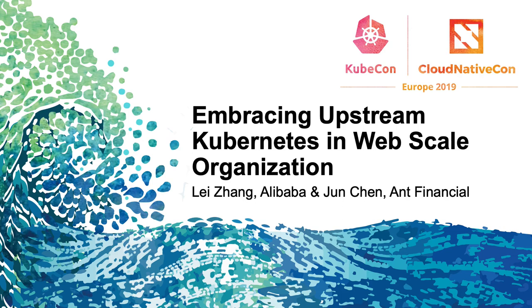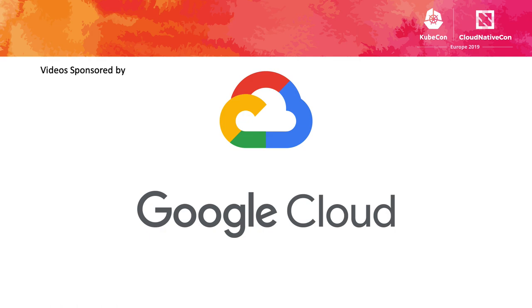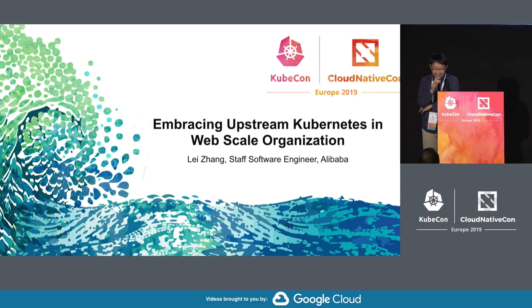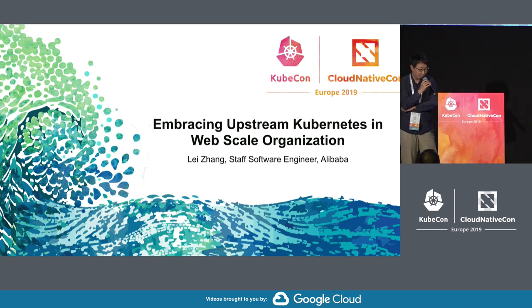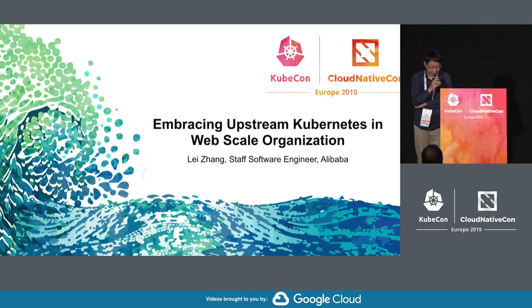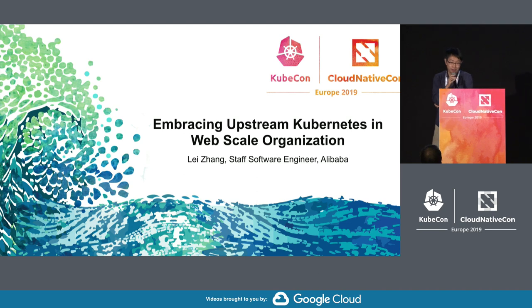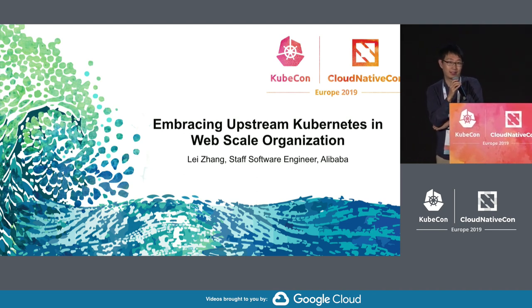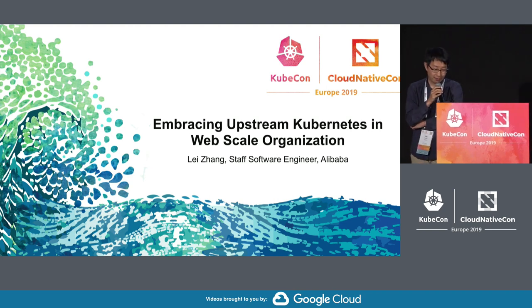I think it's time to start. My name is Lei Zhang, I come from Alibaba. My co-speaker did not make it here because of some problems, so I will give you a solo talk today. The topic I would like to share is embracing upstream Kubernetes in a web-scale organization, which covers user cases and lessons we learned from maintaining Kubernetes clusters of more than 10,000 nodes in Alibaba.